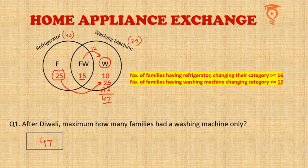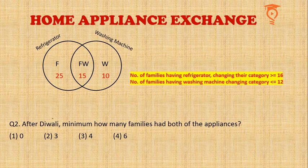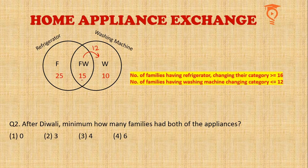Going to the second question: after Diwali, what is the minimum number of families that had both appliances? We established that a maximum of 12 families can shift from the FW category to either F-only or W-only. So after Diwali, 12 will be subtracted from 15, and 3 will be the minimum possible remaining number of families who had both appliances. So 3 is the answer.